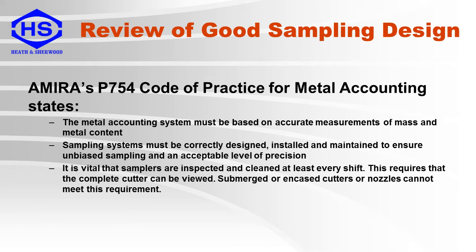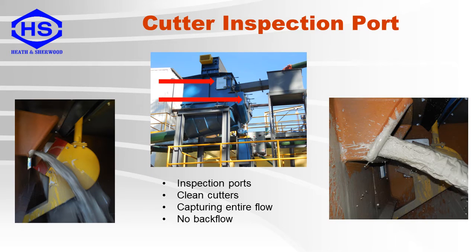Recently in the mineral processing industry there has been the introduction of AMIRA's P754 code of practice for metal accounting. In this code the following assertions are made: the metal accounting system must be based on accurate measurements of mass and metal content; sampling systems must be correctly designed, installed and maintained to ensure unbiased sampling and an acceptable level of precision. It is also stated that samplers must be inspected and cleaned at least once every shift, requiring that the complete cutter can be viewed — submerged or encased cutters or nozzles cannot meet this requirement. Here is an example of a linear sampler showing ports for inspection and cleaning as suggested by the AMIRA code. The cutter is clean, capturing an increment of the complete flow with no loss of particles due to backflow.